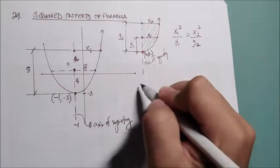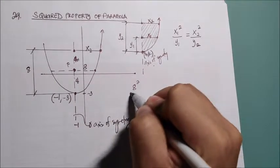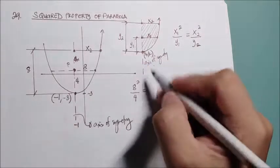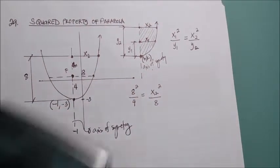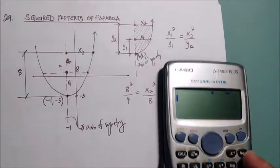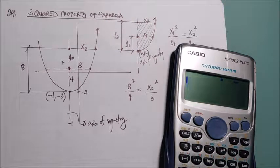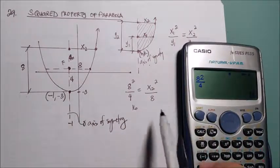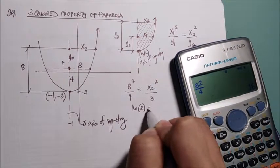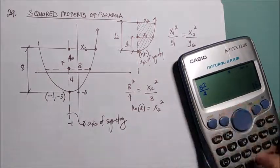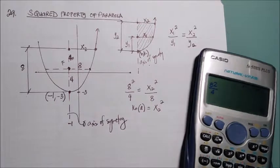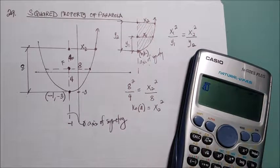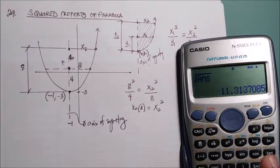So, this example, x1 will be 8 squared over 4, that is equal to x2 squared over y2. So using the calculator, we have 8 squared over 4, we have 16. Then, we'll multiply it by 8. The remaining on the other side is x2 squared. So, 16 times 8, 128, square root of the answer is 11 point 31. Your x2 is 11 point 31.